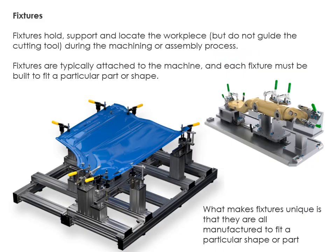Fixtures are a little bit different and are used in more complex manufacturing. In the workshop, things like the heavy clamps on pillar drills are a kind of fixture. Fixtures do not guide the cutting tool at all — instead, they hold, support, and locate the workpiece during the machining or assembly process.